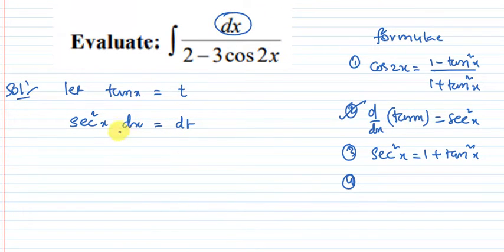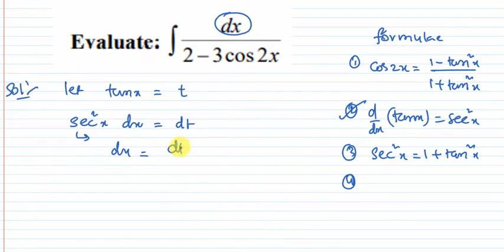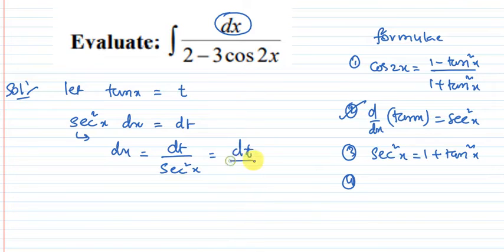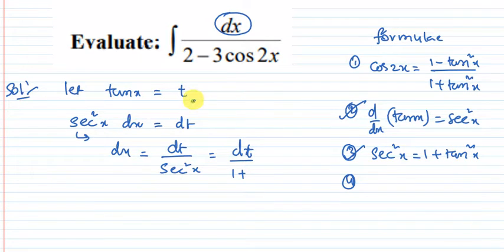We need just the dx value. So dx equals dt divided by secant squared x. Using the trigonometric identity, secant squared x equals 1 plus tan squared x.